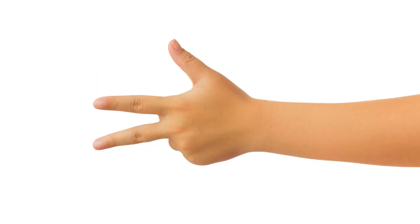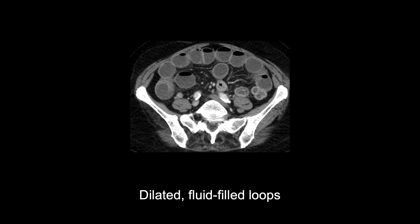Let's start with the diagnosis of a typical small bowel obstruction caused by adhesive disease. There are three key imaging findings that will help you make this diagnosis. First, the presence of dilated, fluid-filled loops of small bowel. The degree of dilation can vary based on the severity and acuity of the obstruction, but in general, when the small bowel loops measure greater than 2.5 to 3 centimeters, an obstruction becomes likely.